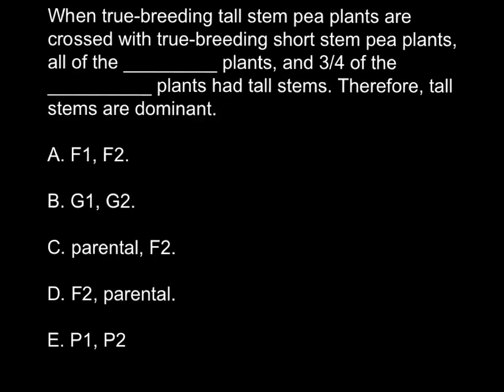In this video tutorial I want to talk about monohybrid cross. Here is the question: when true breeding tall stem pea plants are crossed with true breeding short stem pea plants, all of the F1 plants had tall stems, and three quarters of the F2 plants had tall stems. Therefore, tall stems are dominant.